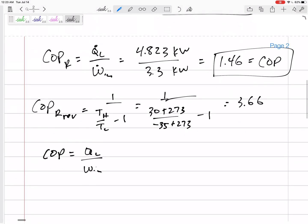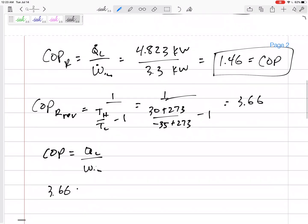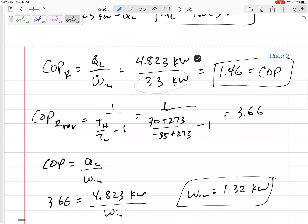WN, so this 3.66 is equal to the QL which we already had, we already knew, we already found: 4.823 kilowatts over WN. WN, the minimum best case, I need a work input of 1.32 kilowatts compared to the actual...